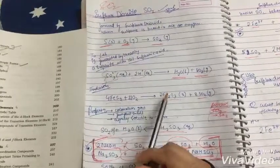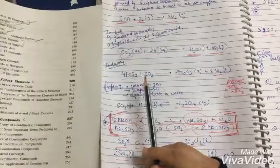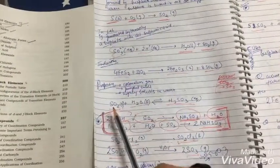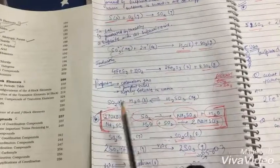Properties: colorless gas, pungent smell, highly soluble in water. SO2 plus H2O gives us H2SO3.